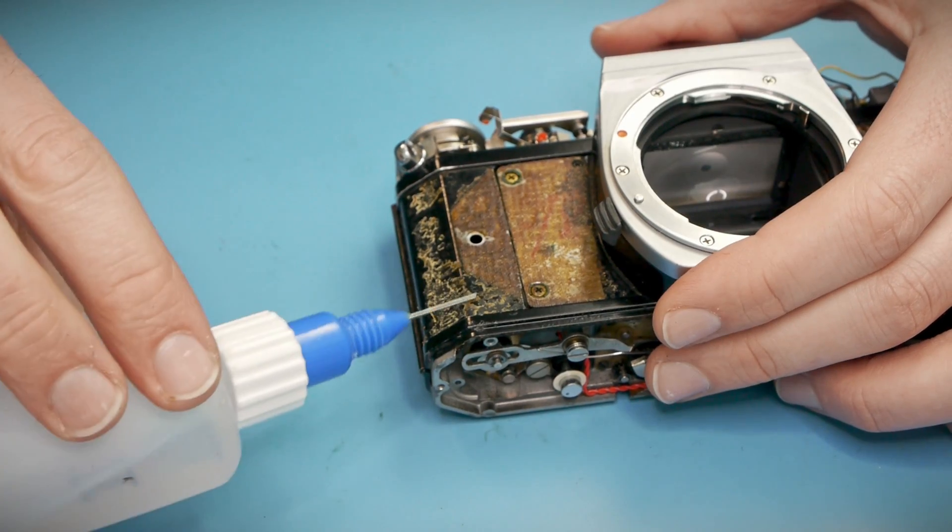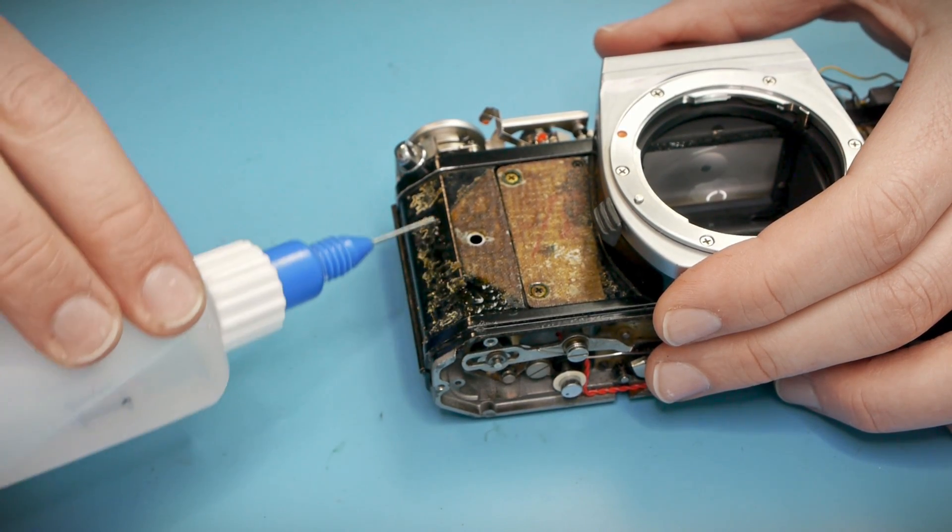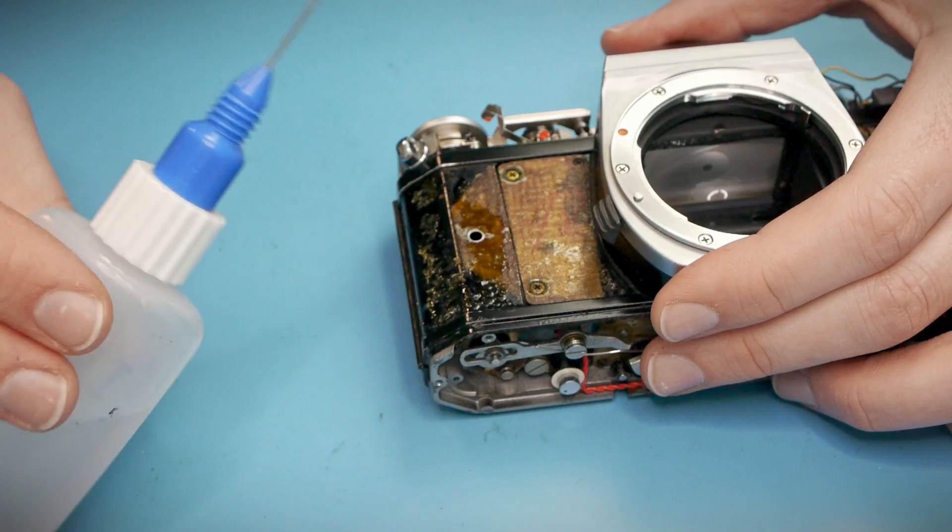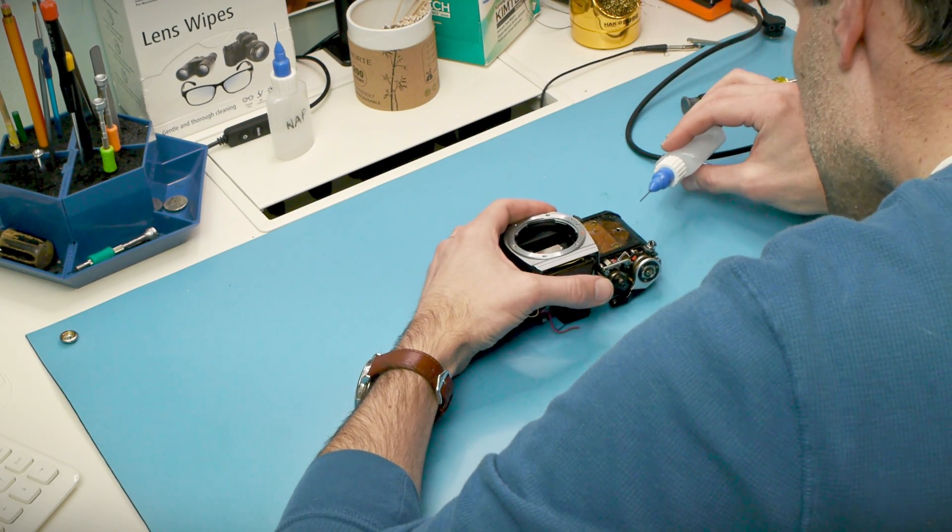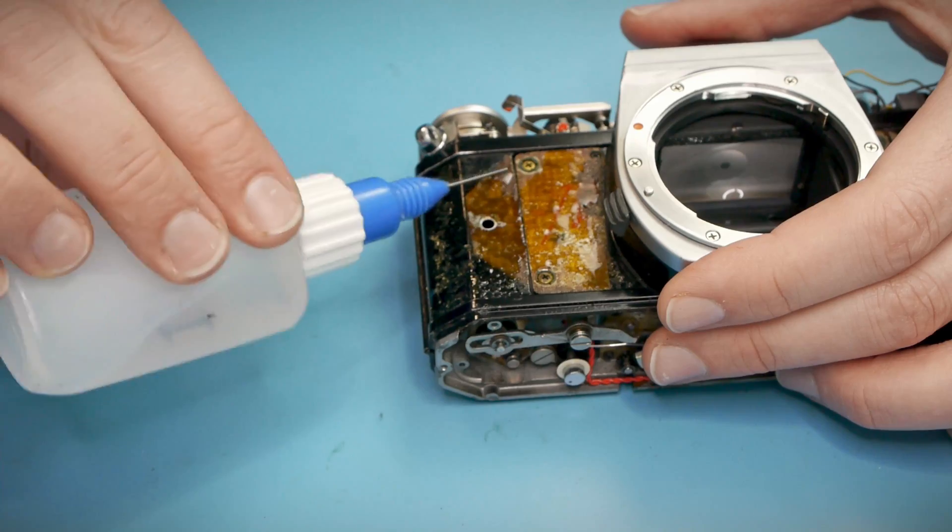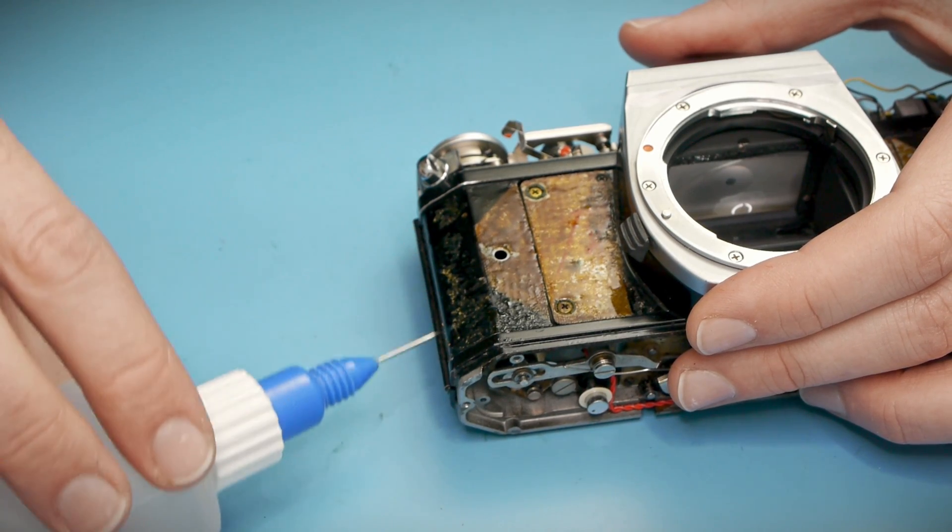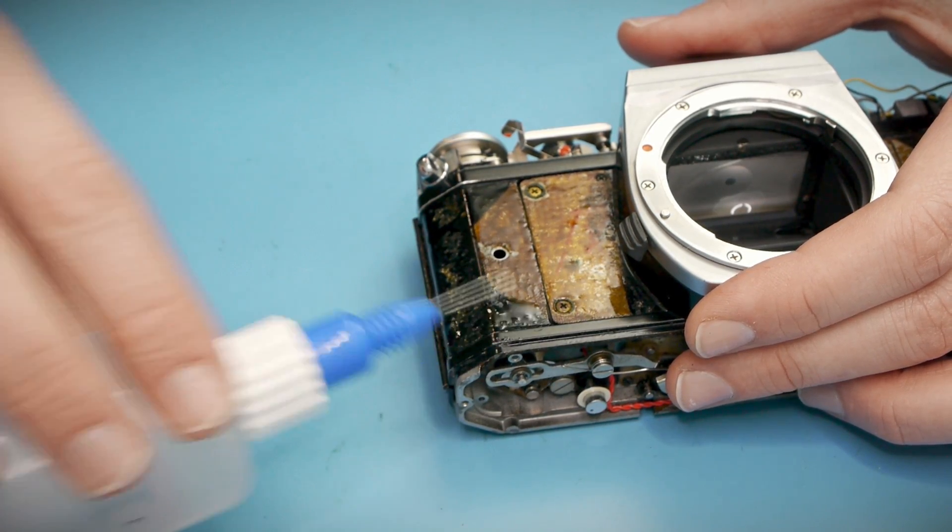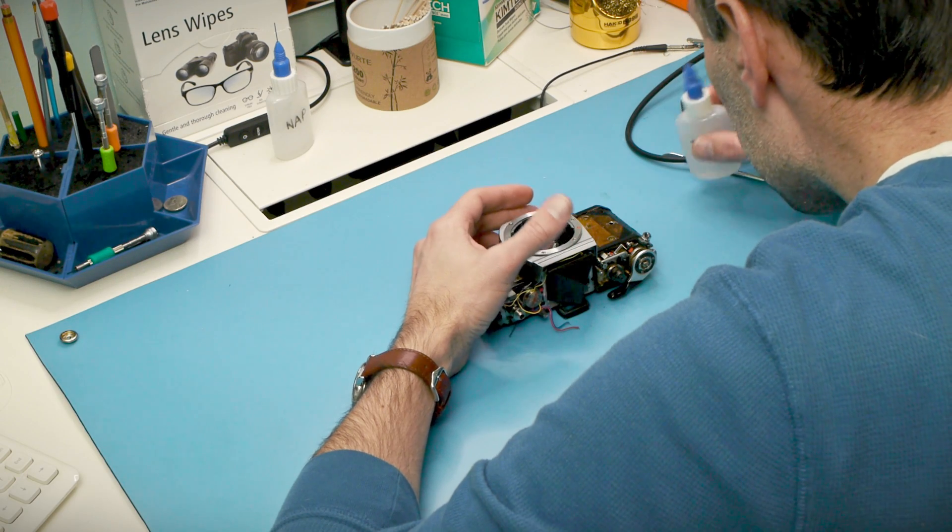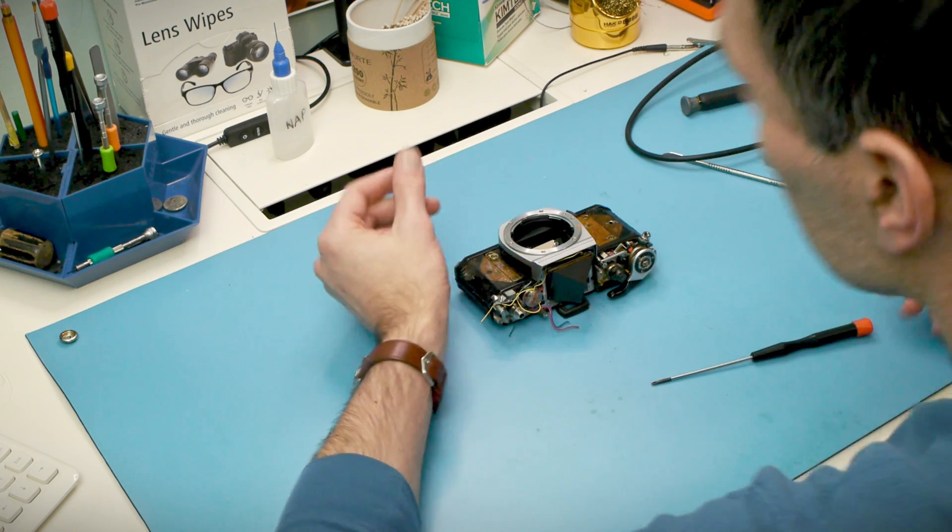I want to remove all the old dried out adhesive so when I reapply the leatherette I can get a smooth solid bond to the camera. And I prefer to do that now rather than later so I don't have to handle a sticky camera for the rest of the repair. I start with a good soak to let the alcohol do most of the work for me. And once it is properly softened it should come off without any aggressive scraping. It still makes a mess though.